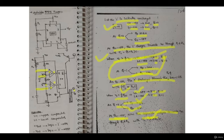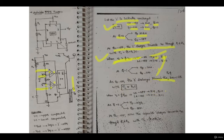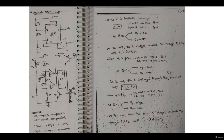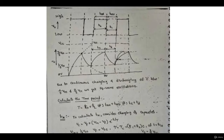The output will go from plus V-sat to minus V-sat continuously. I hope you can see how things are working. Now we will look at the waveform which will give you a clearer picture of how the circuit is operating.